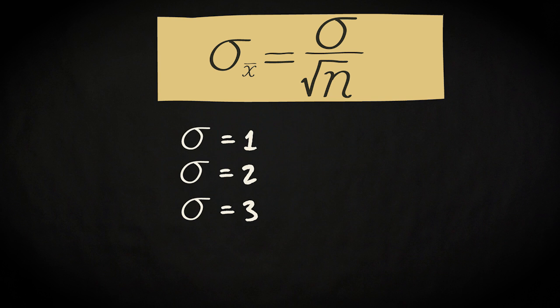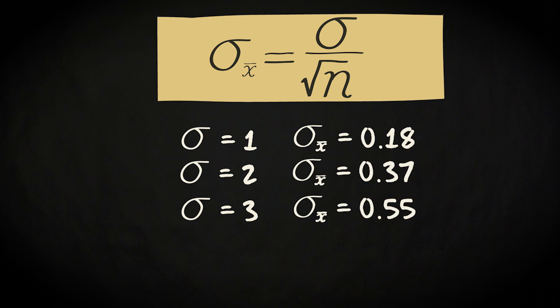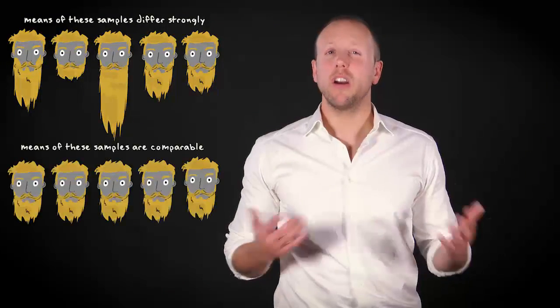So, if the standard deviation of the population distribution increases, the standard deviation of the sampling distribution increases as well. In other words, the larger the variability in the population, the larger the variability of the sample means. This makes sense intuitively: if you draw various samples of 30 subjects from a population in which men strongly differ from each other regarding the length of their beards, you can expect that the means of these samples differ more strongly from each other than if you draw samples from a population in which men hardly differ from each other.